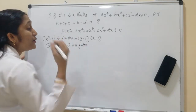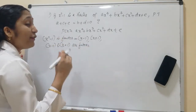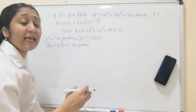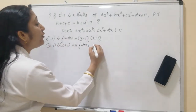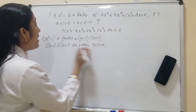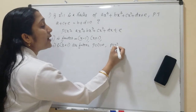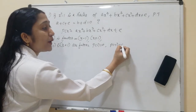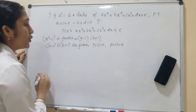Using the factor theorem: if p(x) is a polynomial and x - a is a factor, then p(a) = 0. So since x - 1 and x + 1 are both factors, we need p(1) = 0 and p(-1) = 0. We have to find these two values.